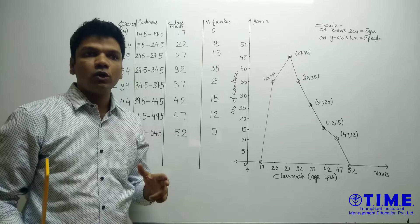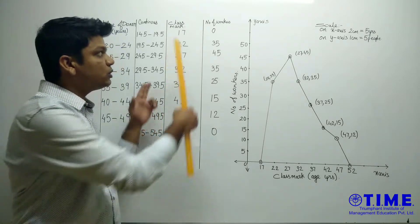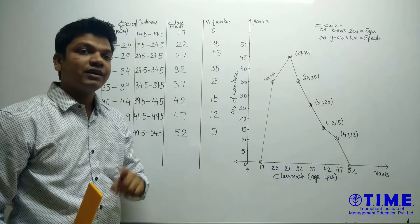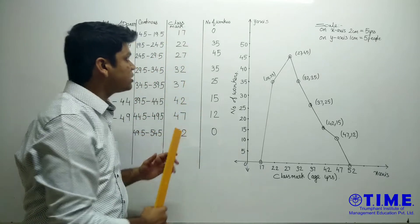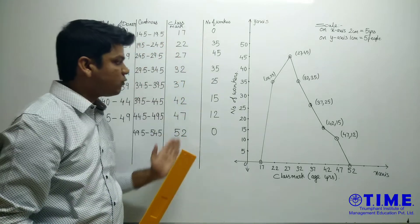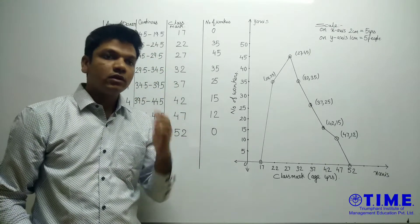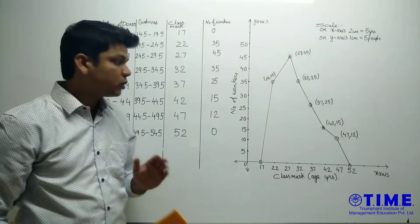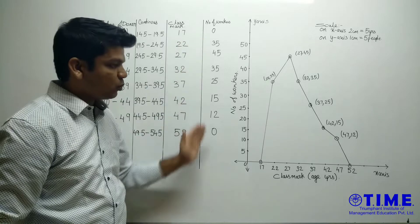For frequency polygon, rather than in a histogram, in histogram we don't need to find a class mark. But in frequency polygon, it is necessary to find a class mark. So we should find the class mark for each and every class. Class mark is nothing but lower limit plus upper limit divided by 2. After you find the class mark, check the frequency.